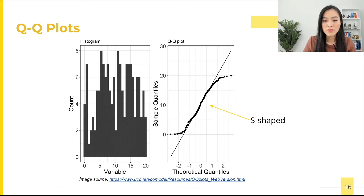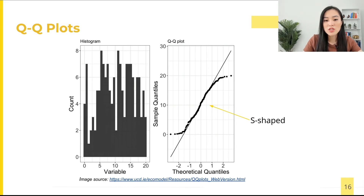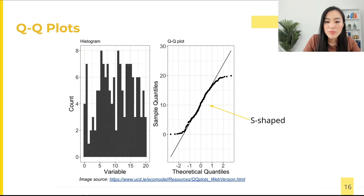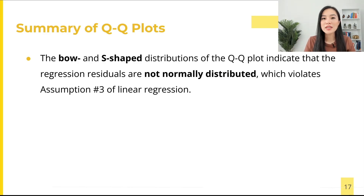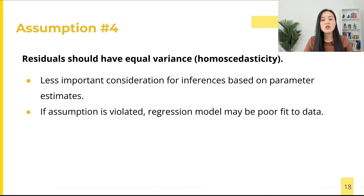Here's another example: this is an S-shaped distribution. This plot shows a distribution that is under-dispersed relative to a normal distribution — it's more like a uniform distribution, as shown in the histogram on the left. The tails in such a distribution are virtually non-existent and there appear to be no outliers. In summary, the bow-shaped and S-shaped distributions in the QQ plot indicate that the residuals are not normally distributed, violating the normality assumption.